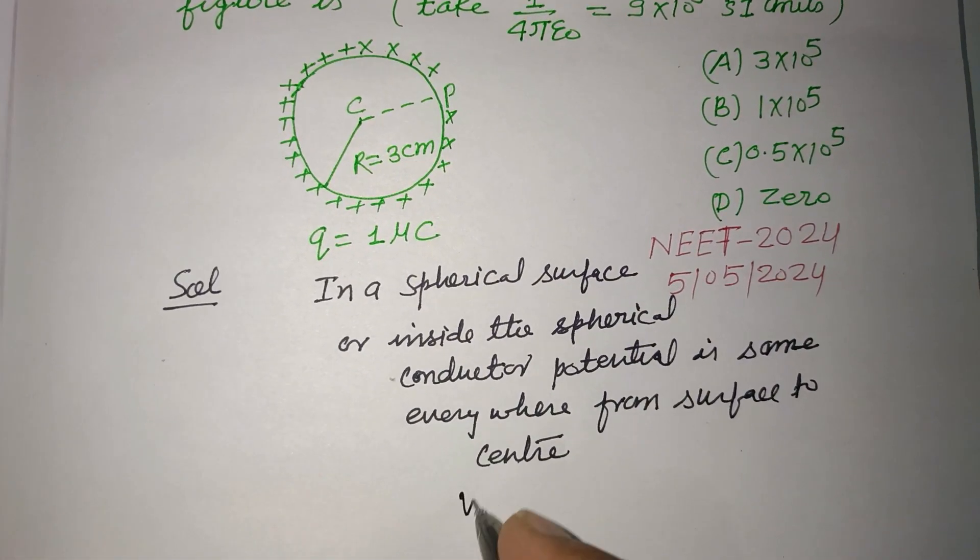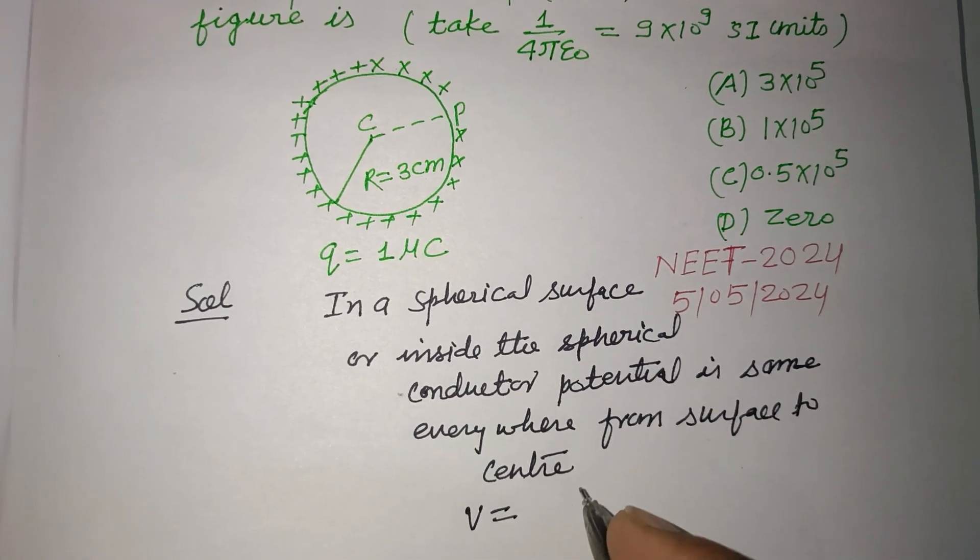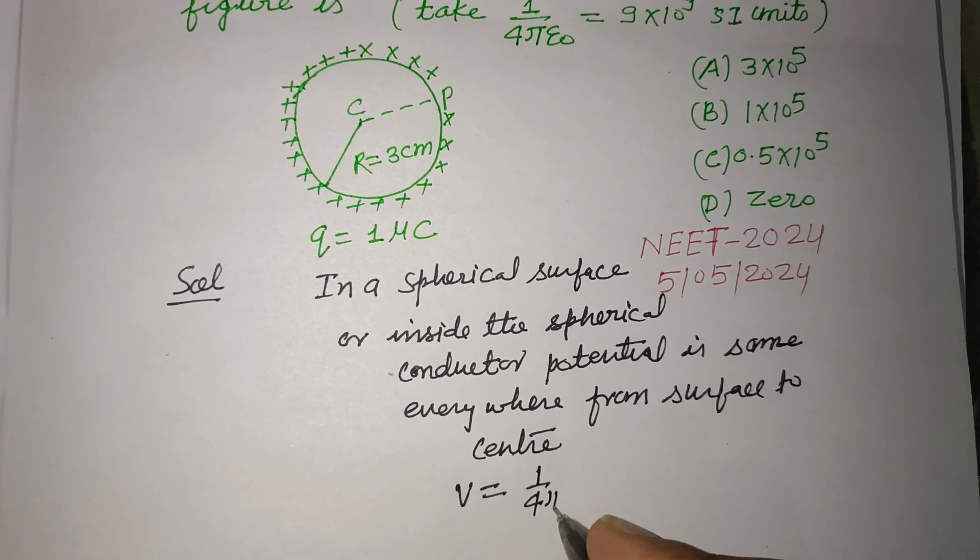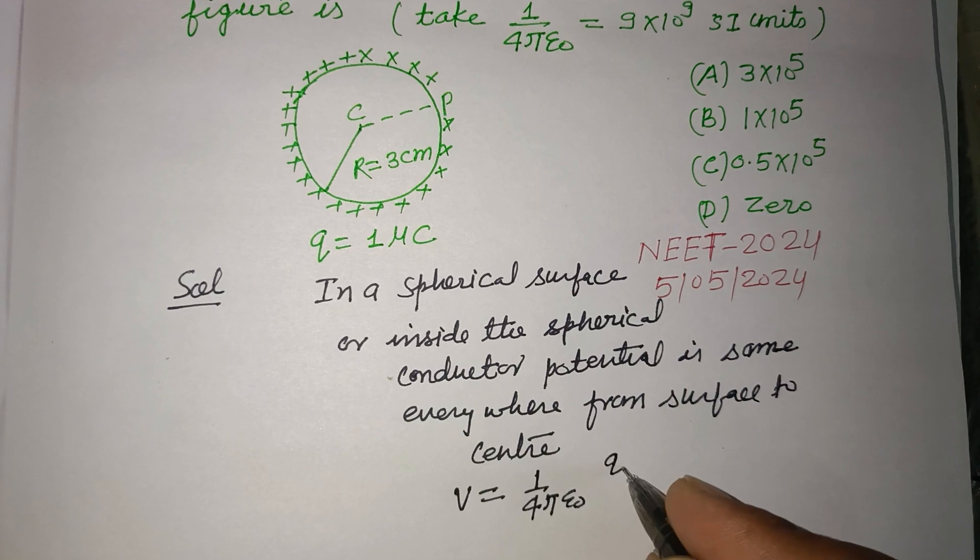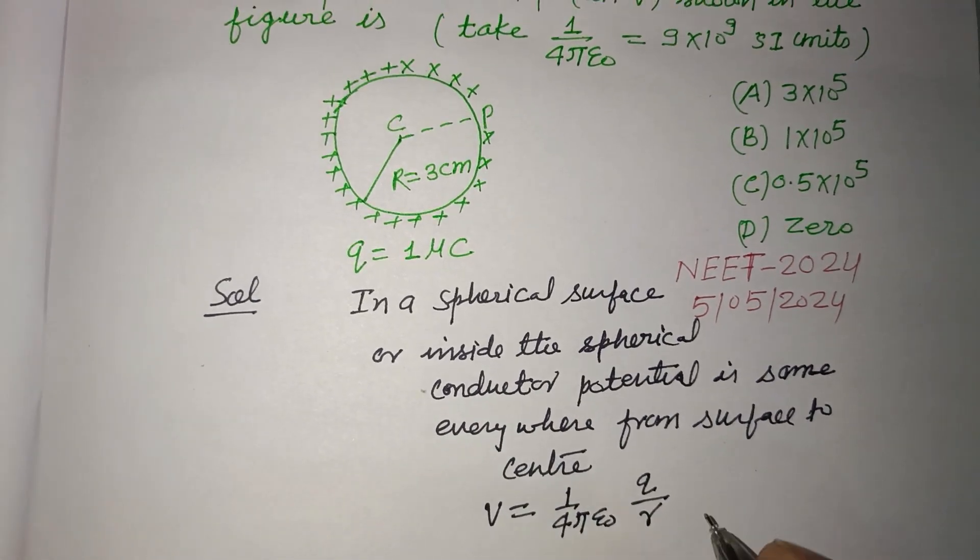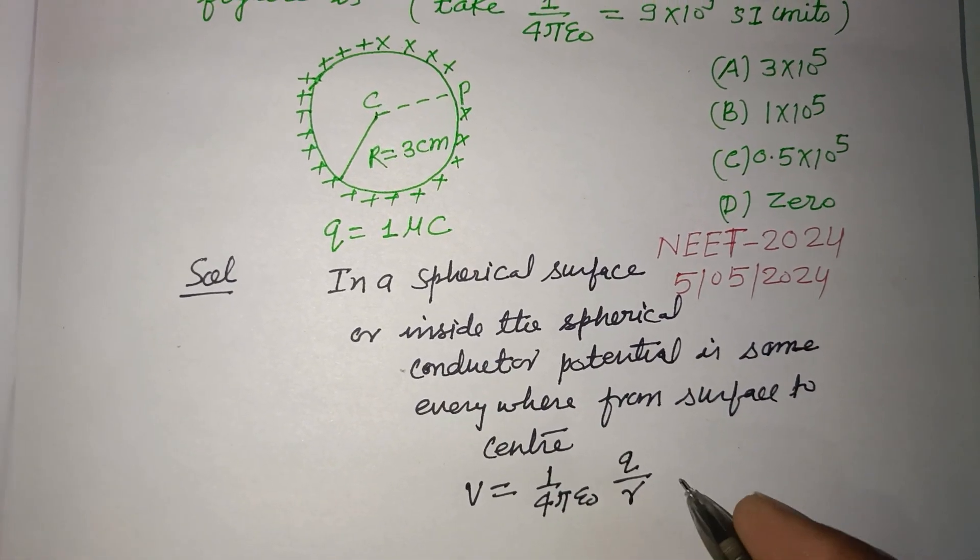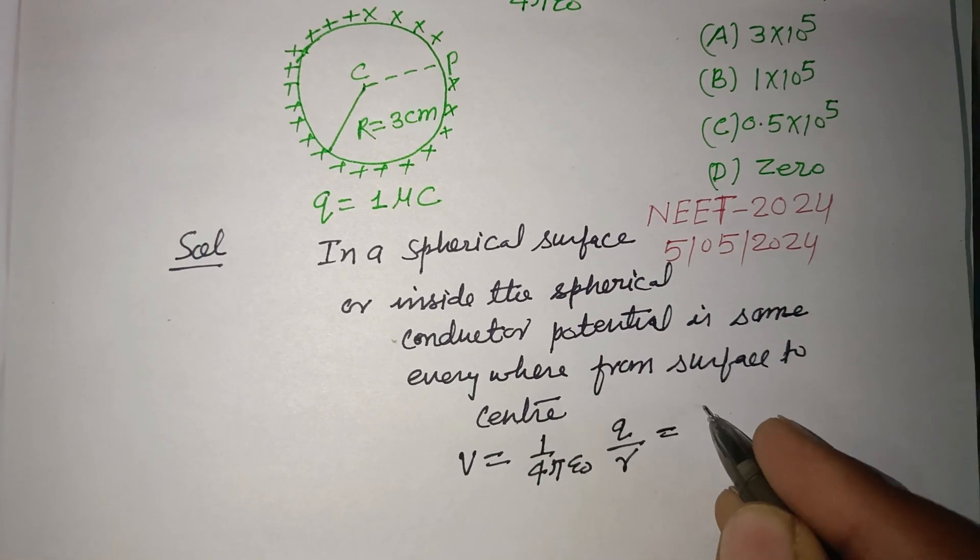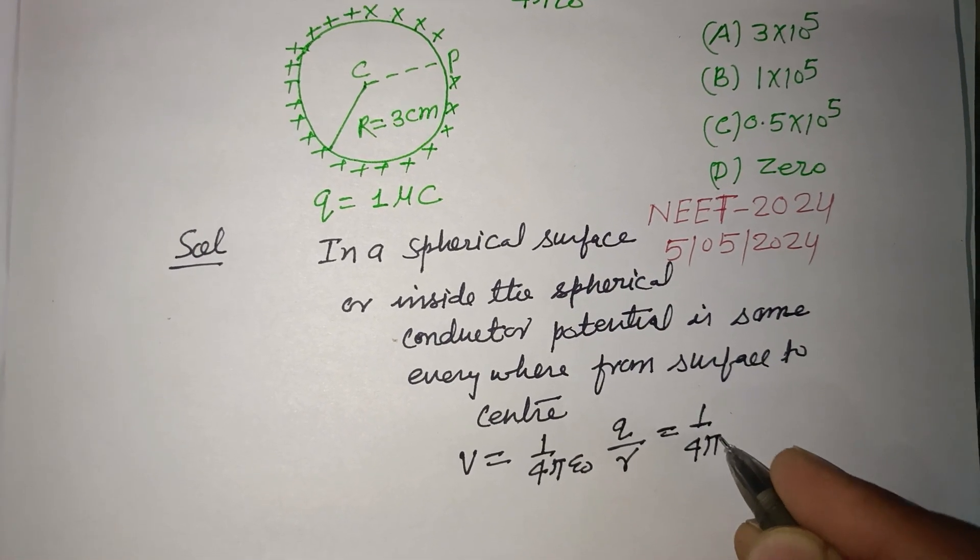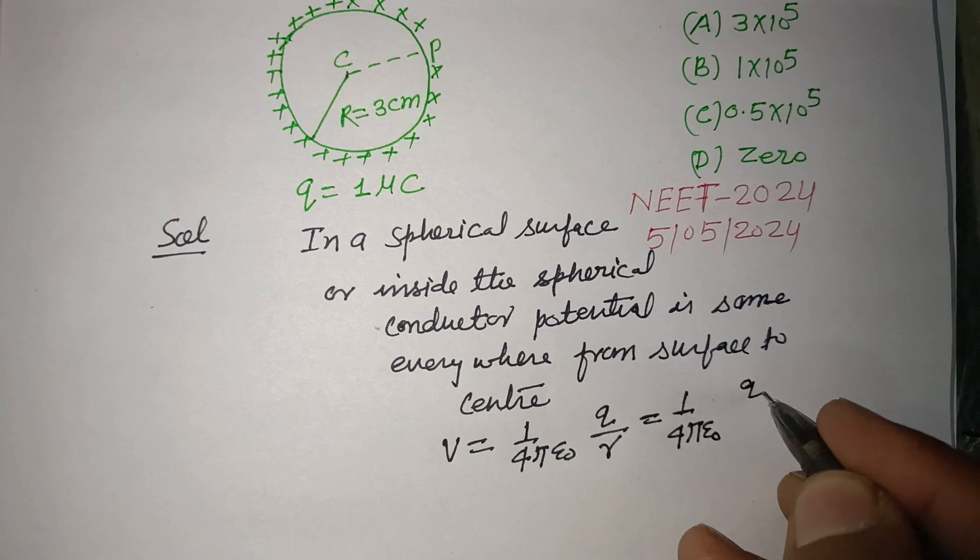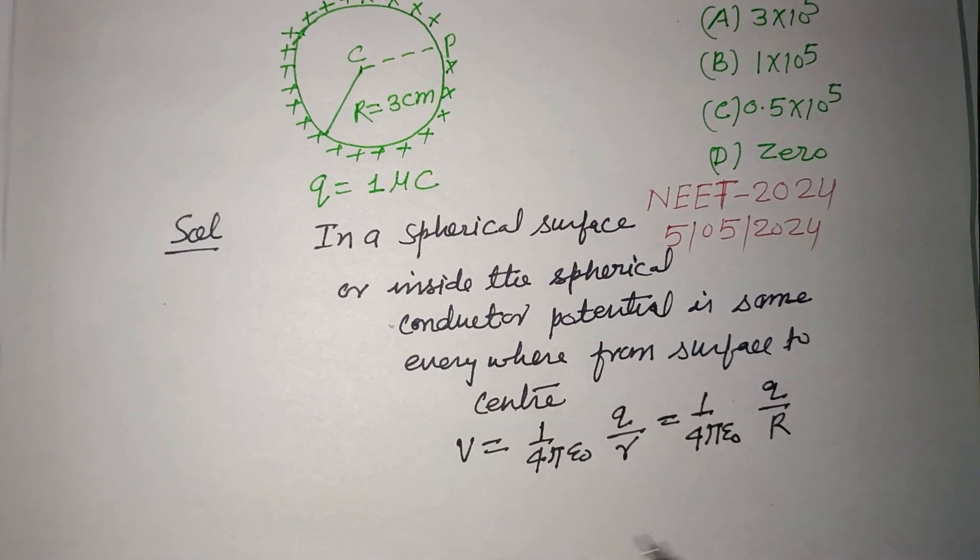Which is V equal to 1 upon 4 pi epsilon naught Q over R. Here R is the radius of the spherical conductor. Here R is given to us as capital R.